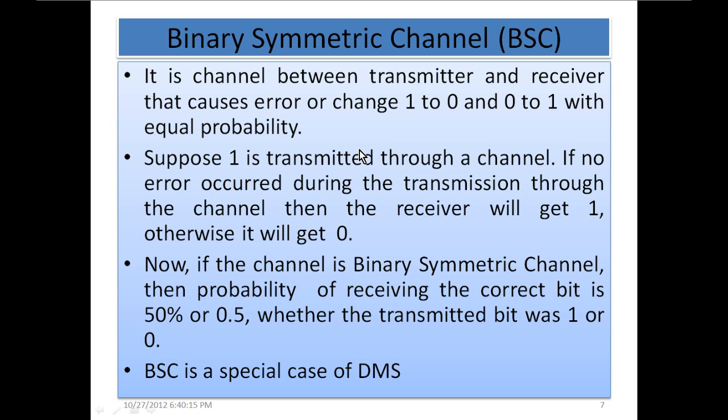Suppose 1 is transmitted through a channel. If no error occurred during transmission, the receiver will get 1, otherwise it will get 0. If the channel is binary symmetric channel, then probability of receiving the correct bit is 50% or 0.5 whether the transmitted bit was 1 or 0. The channel behaves equally with both transmitted bits and the chances of flipping from 1 to 0 or 0 to 1 is equal.